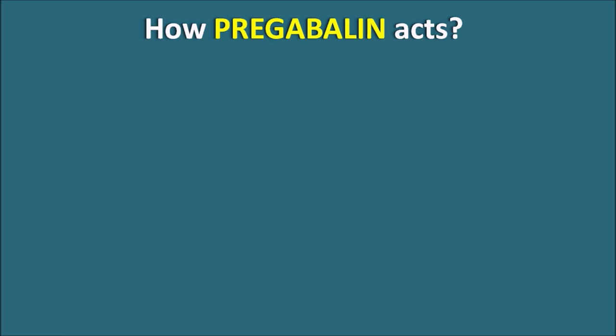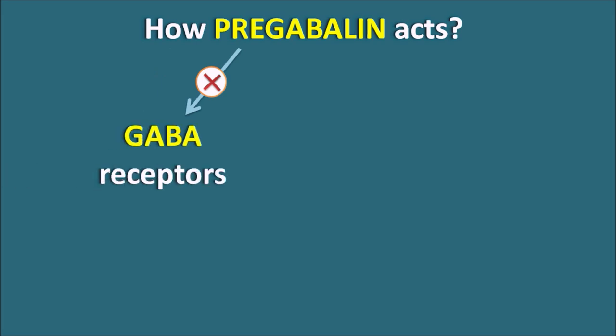So pregabalin is structurally related to GABA, but how does it act? Even though pregabalin is structurally related to GABA, it is not acting on GABA-A receptors or GABA-B receptors, and it is also not going to inhibit the uptake or the metabolism of GABA. In this way, this drug has no action related to GABA at all. Then how does this drug act?